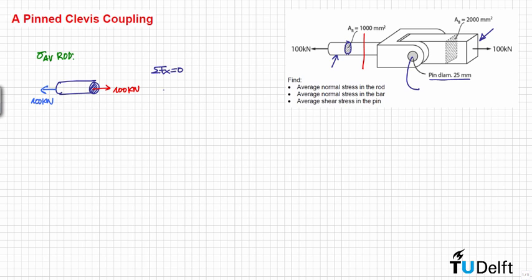Then from here we know that the average stress in the rod is equal to the force divided by the area, so we know that this force is equal to 100 kN, and the area is equal to 1000 mm², so this is equal to 100 MPa.